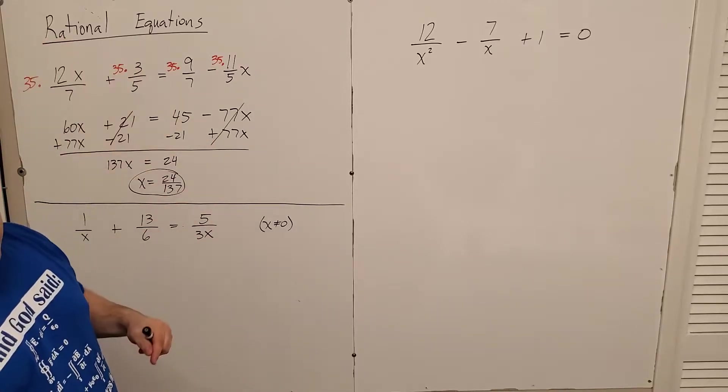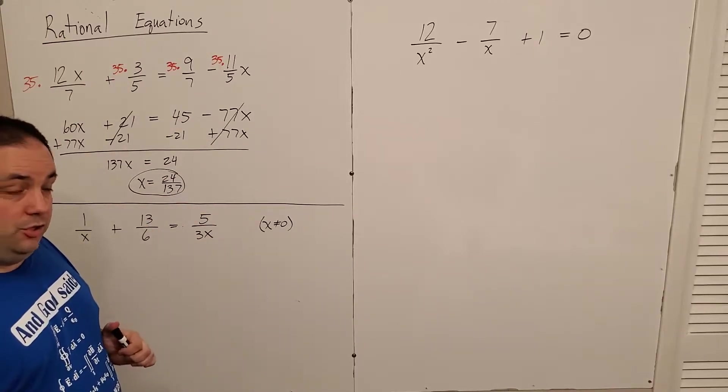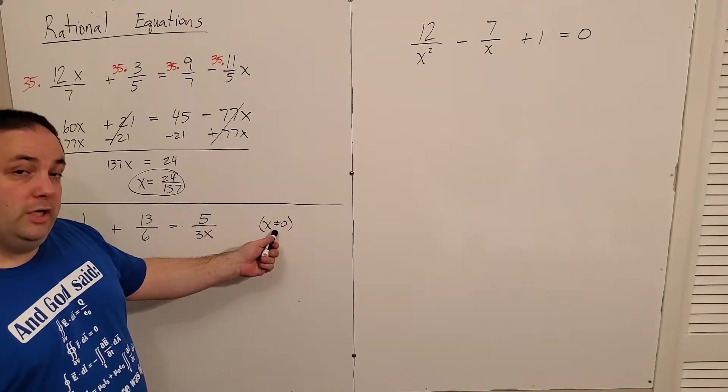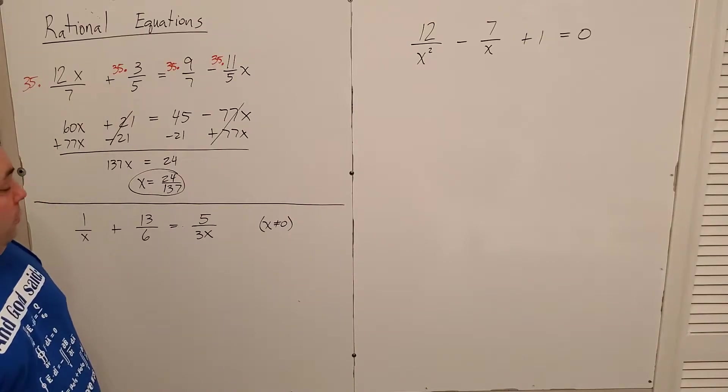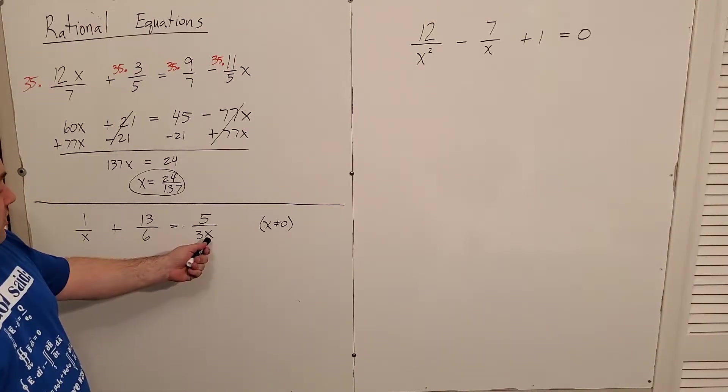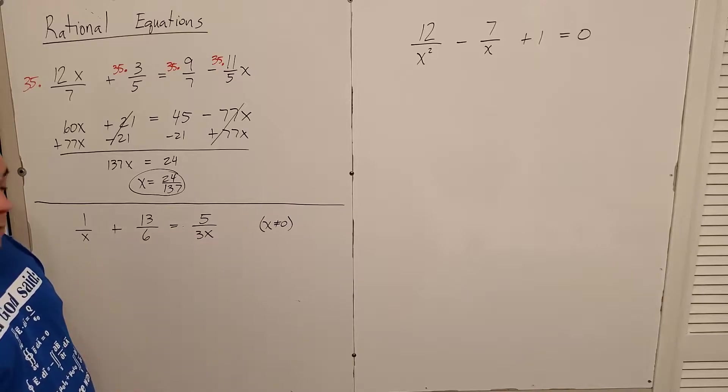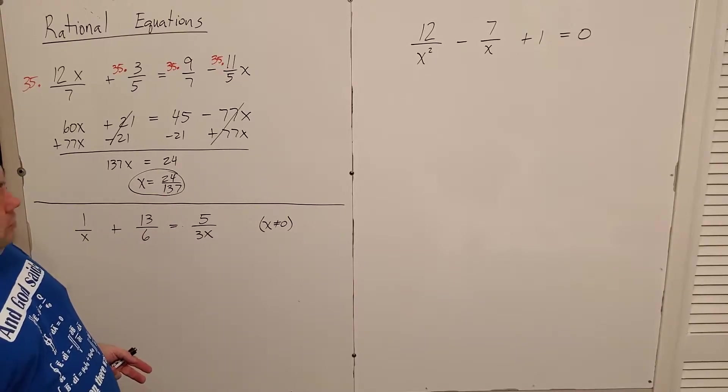Because remember, if x is in a denominator, then you've got a domain issue. And domain issue means something that you can't plug in, right? Something that when you plug it in is going to cause a big boo-boo. And here, if I plug in the number zero, it causes that denominator to be zero, which is a division by zero. No good.